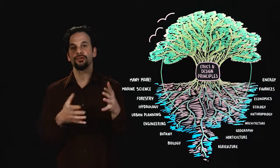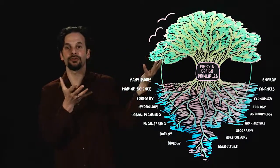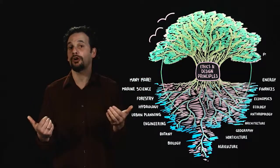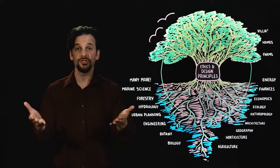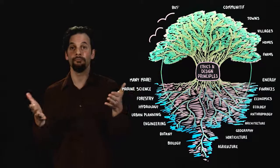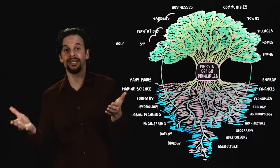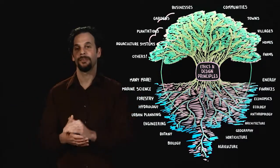That tree then grows leaves, and the fruits are harvested through the design and development of farms, homes, villages, towns, communities, businesses, gardens, plantations, aquaculture systems, and others.